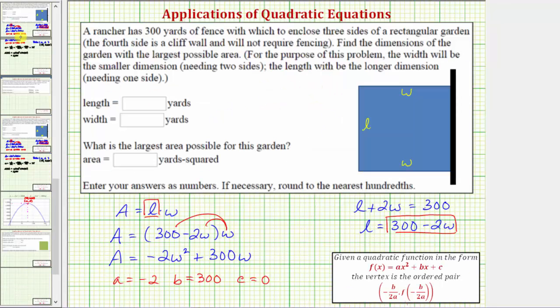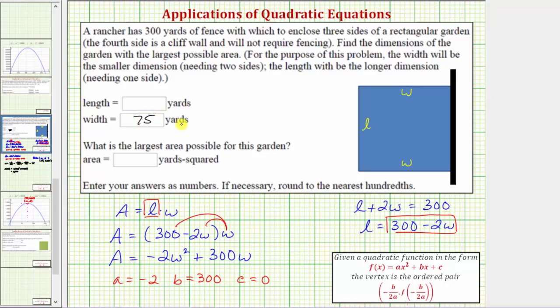Now going back to our first slide, we now know the width is equal to 75 yards to maximize the area. We also know the largest possible area is 11,250 square yards, but we still don't know the length.